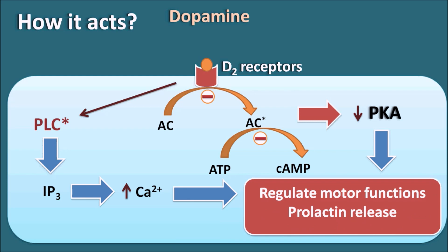Both of these result in dopamine actions such as regulation of motor functions and control of prolactin release. Dopamine regulates motor functions as well as prolactin release by acting on D2 receptors. When dopamine levels are deficient, motor functions are disturbed leading to Parkinson's disease, and prolactin is excessively released leading to galactorrhea.